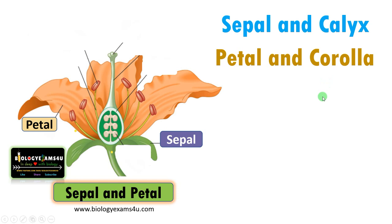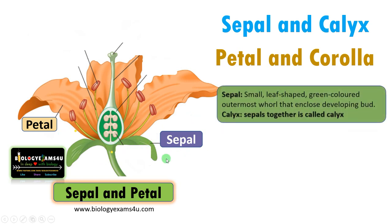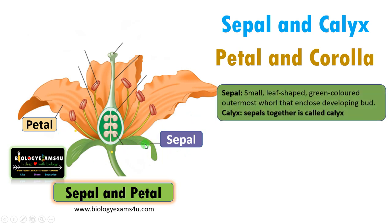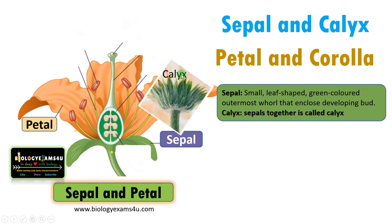First, sepal and calyx. Sepal, as you see, is the outermost whorl of a flower — a small, leaf-shaped, often green-colored outermost whorl. The term calyx is used when sepals are grouped together; in other words, calyx is made up of sepals.